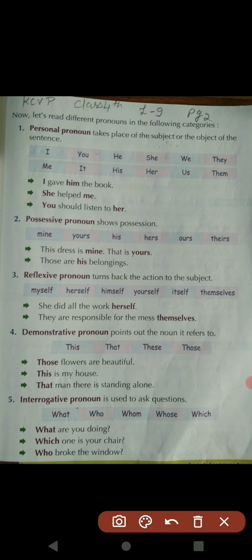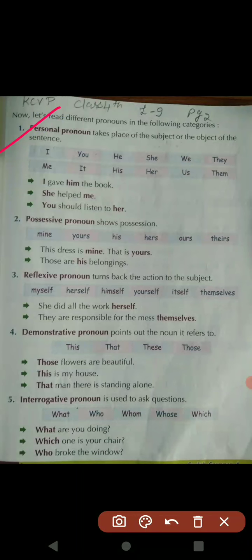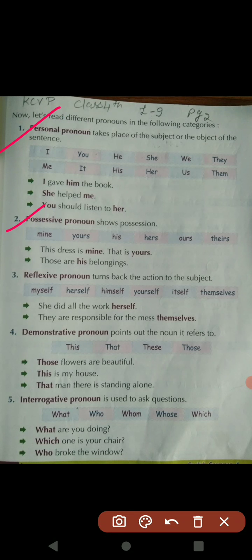After that, how many types of pronoun are there? In your syllabus, there are five types of pronoun. First is personal pronoun, second is possessive pronoun, third is reflexive pronoun, fourth is demonstrative pronoun, and the last one is interrogative pronoun. You have to learn all the spellings carefully — personal, possessive, reflexive, demonstrative, and interrogative.